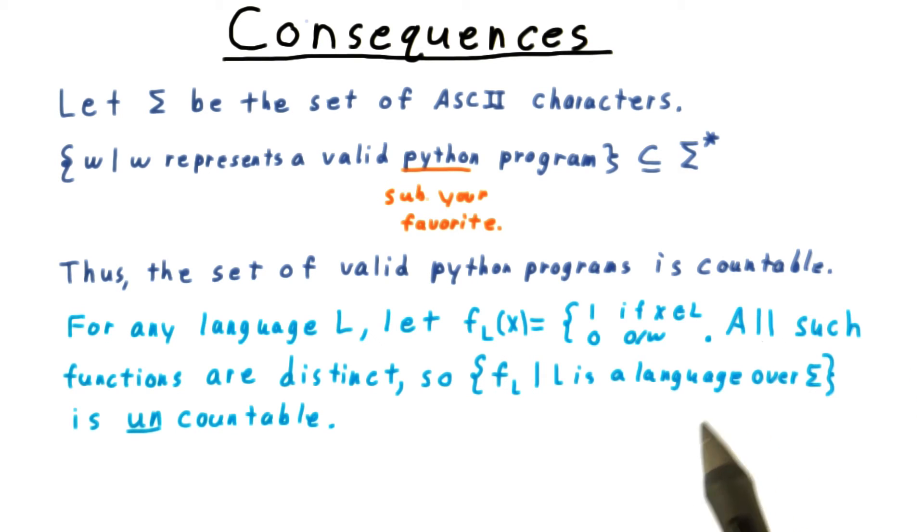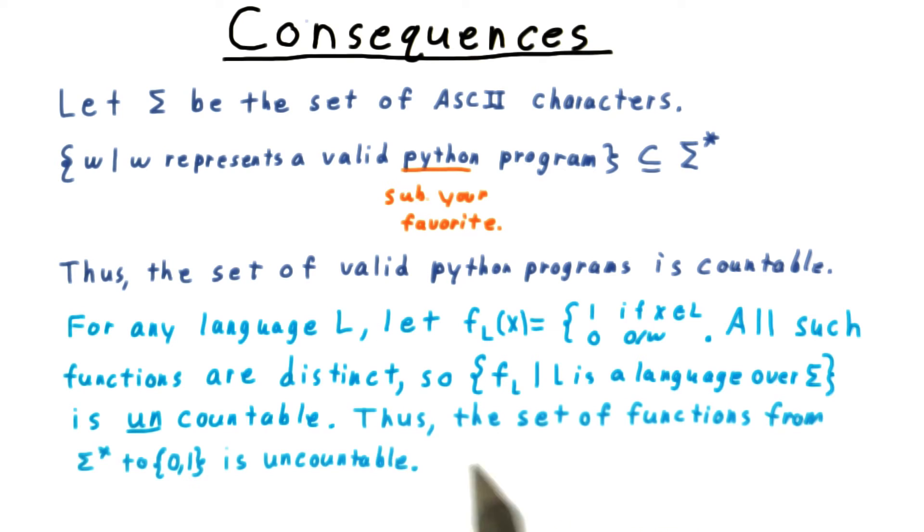All such functions are distinct, so the set of these functions must be uncountable. Or in other words, the set of functions from sigma star to 0, 1 is uncountable.